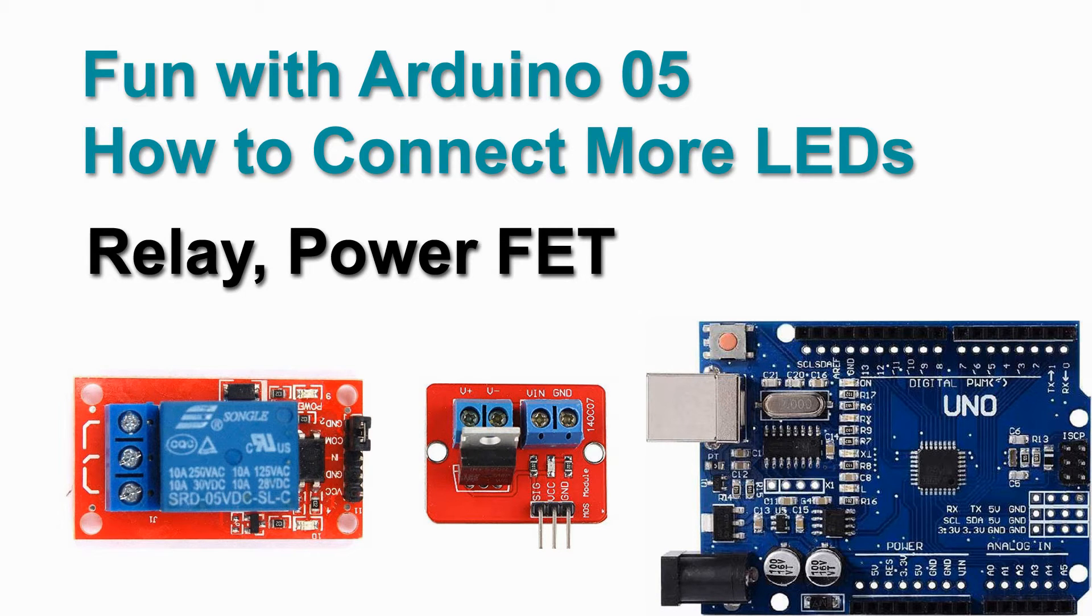Welcome to video 5 on fun with Arduino. In the previous video we wrote a software to control an external LED and simulate a night cycle. But that was just one LED and we were going to try figure out how we can have multiple LEDs to build for instance street lights or houses that are lit, a station that is lit on our model railway layout.